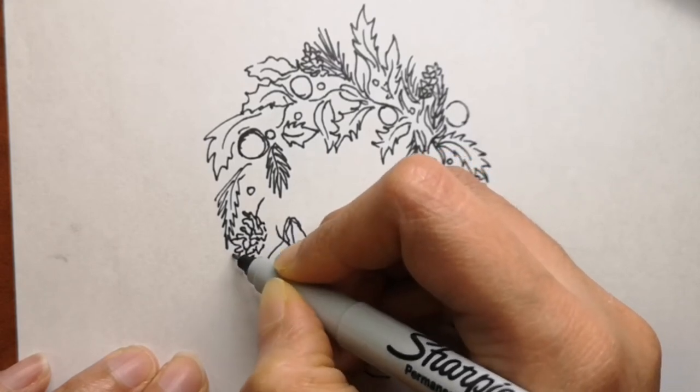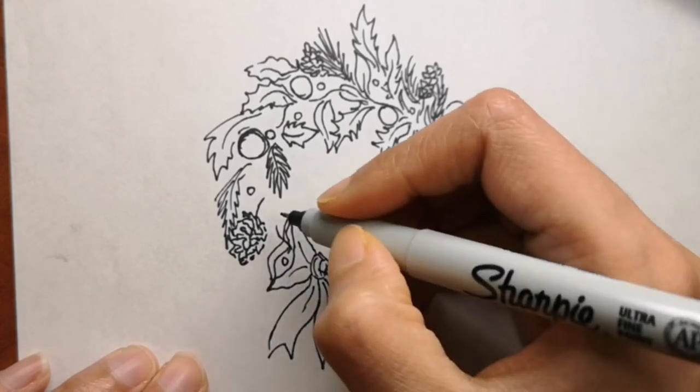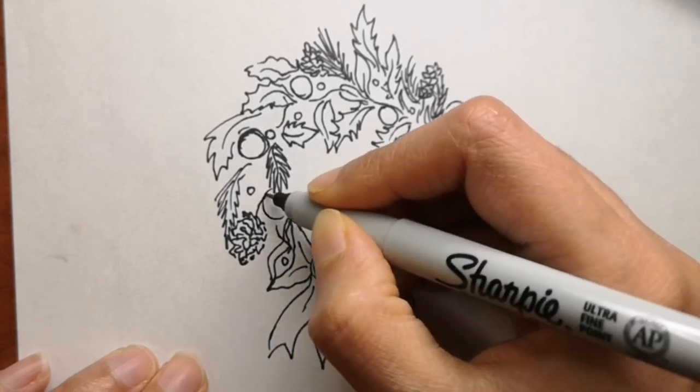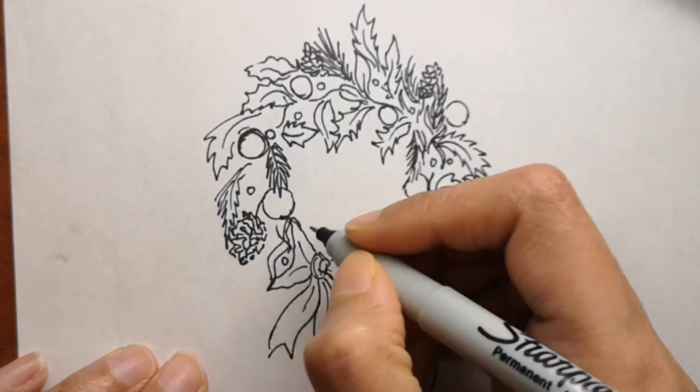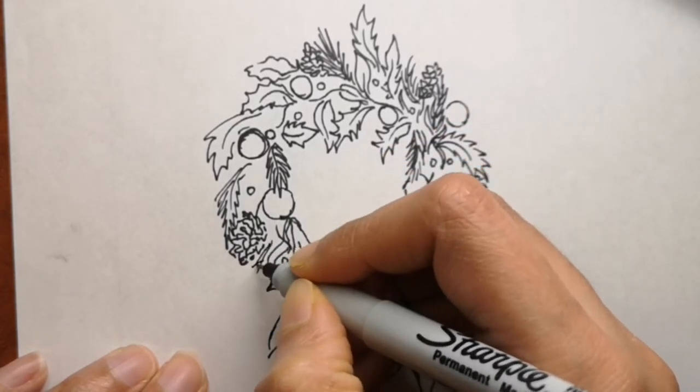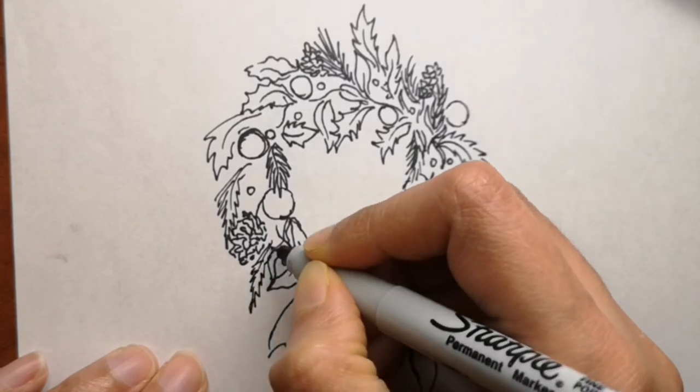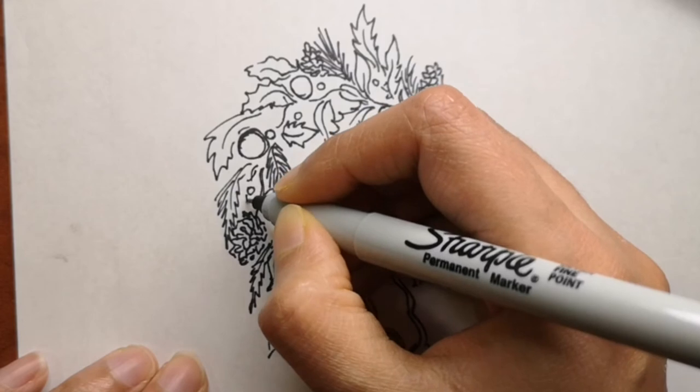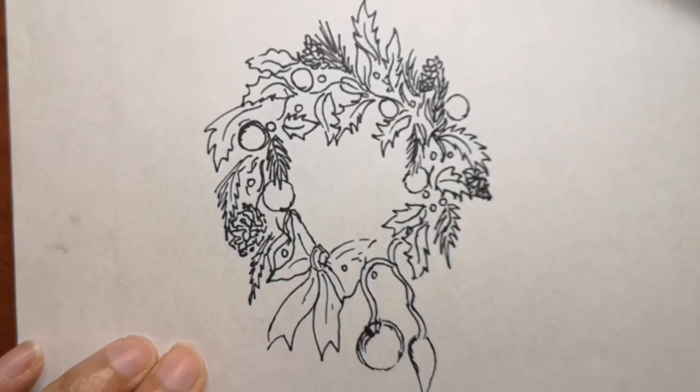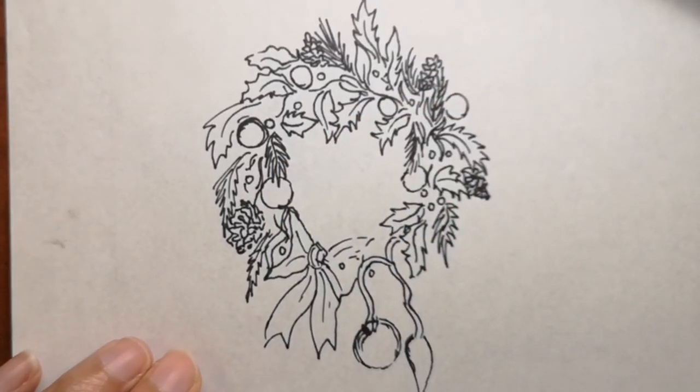Some more fun facts for you: the idea to use candles in Christmas wreaths to count down the advent was possibly invented by a German pastor John Wickern in the mid-1800s as a daily advent calendar for children.